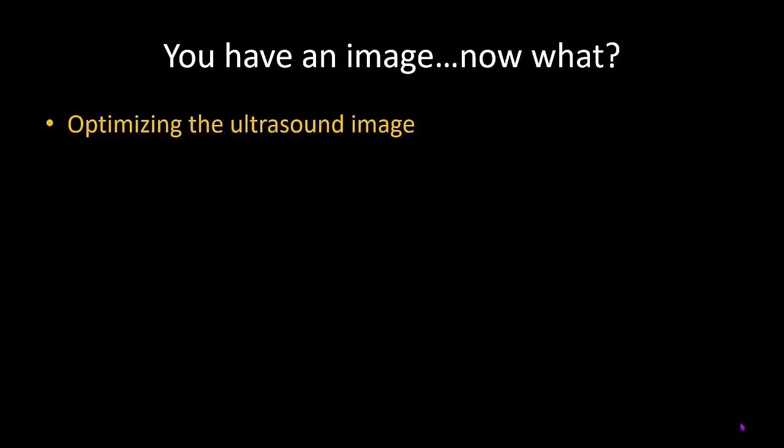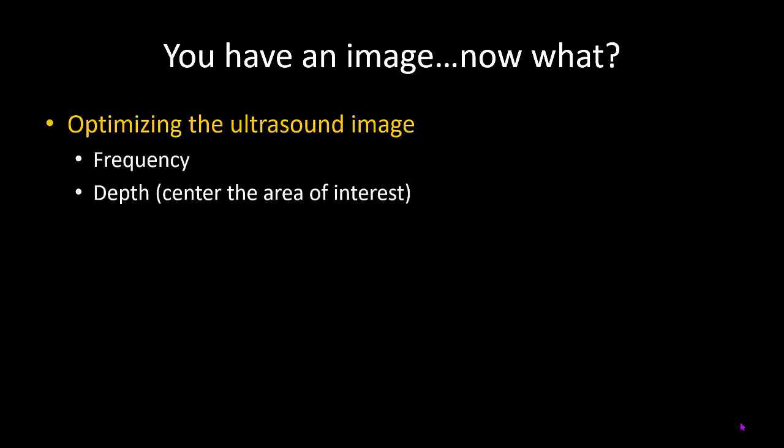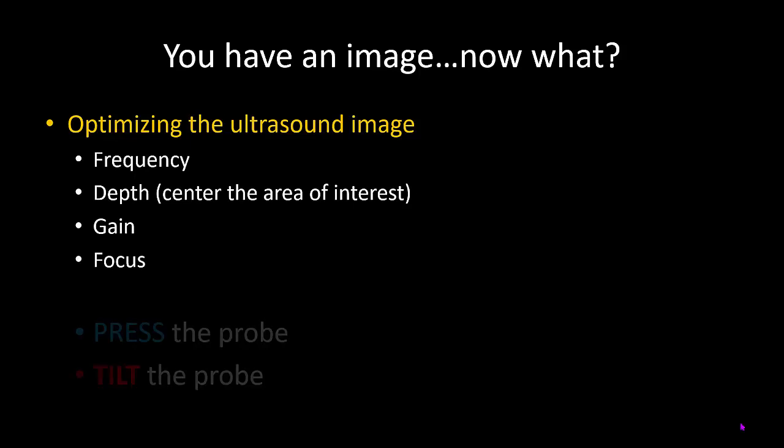So you've set up your machine, positioned yourself, and placed the probe where you expect to find your target nerve. The next step is to optimize your image. There are the obvious things to pay attention to, such as setting the appropriate frequency range, depth, gain, and focus on the machine. What is just as important is how you handle the probe, and the two most important movements for optimizing image quality are pressure and tilting.